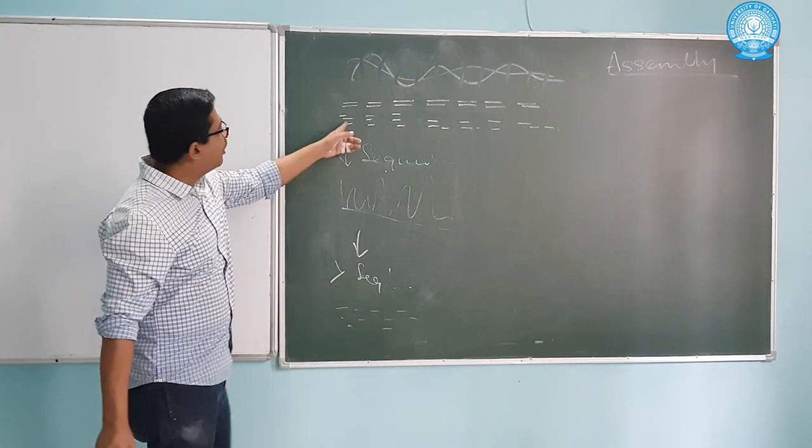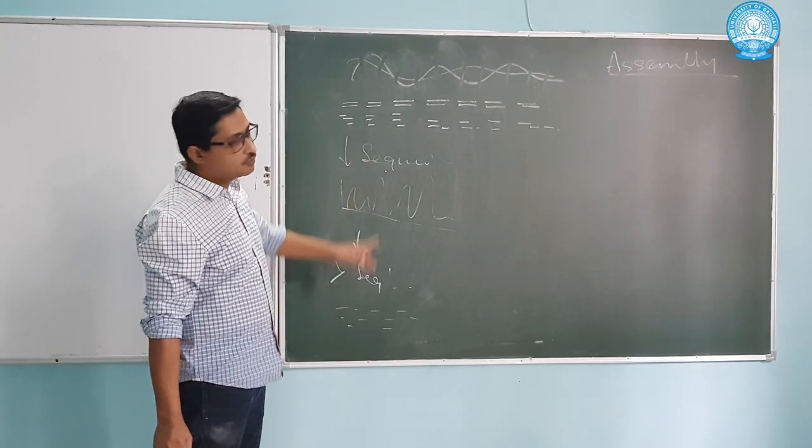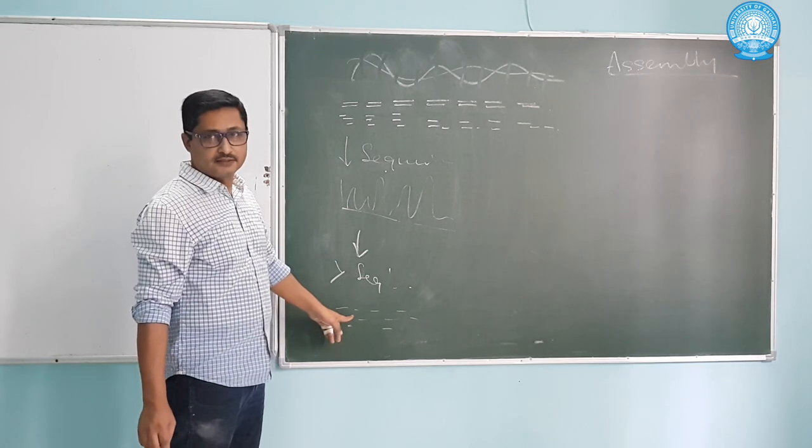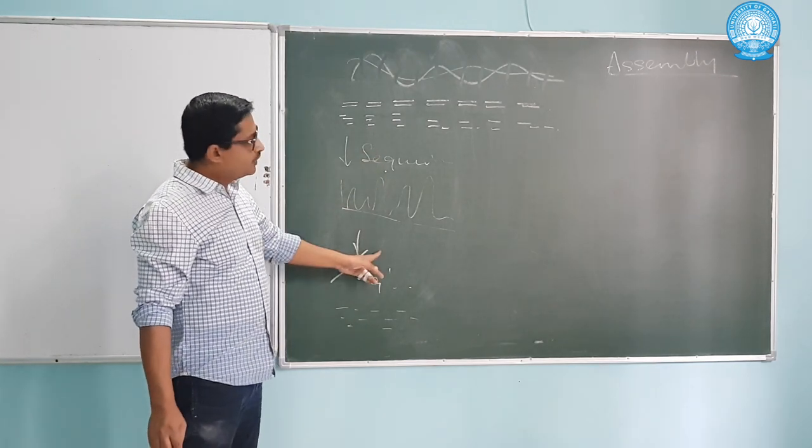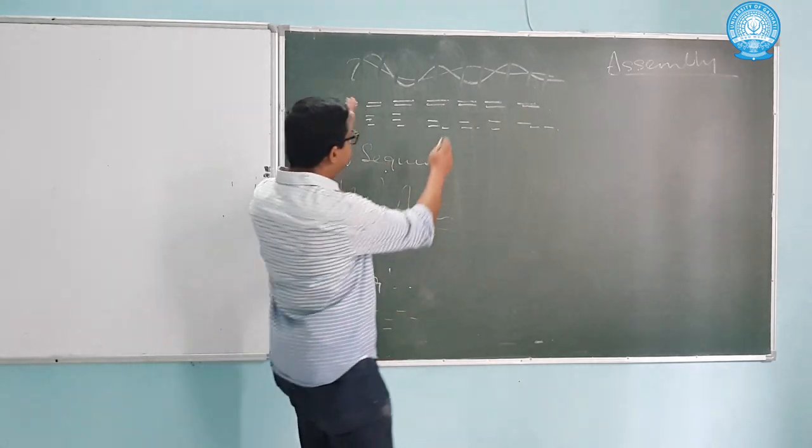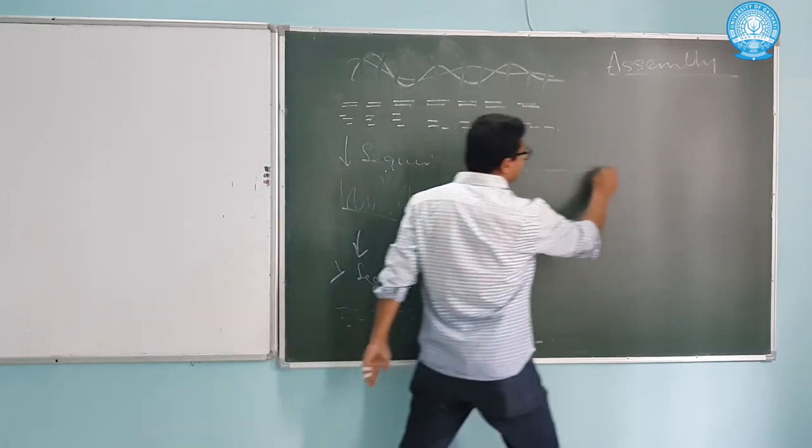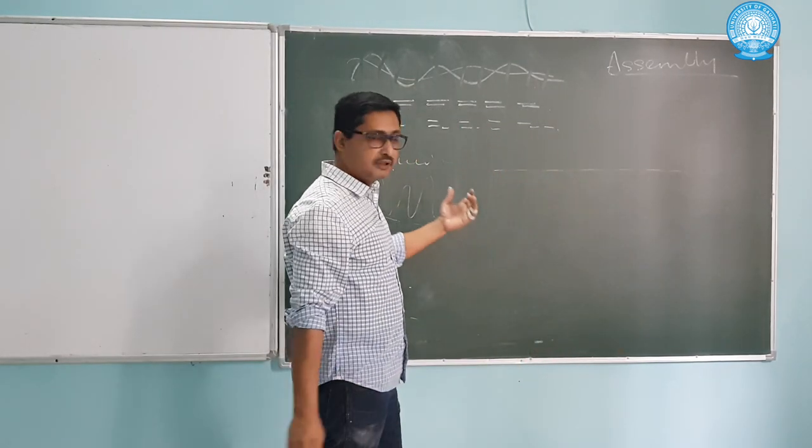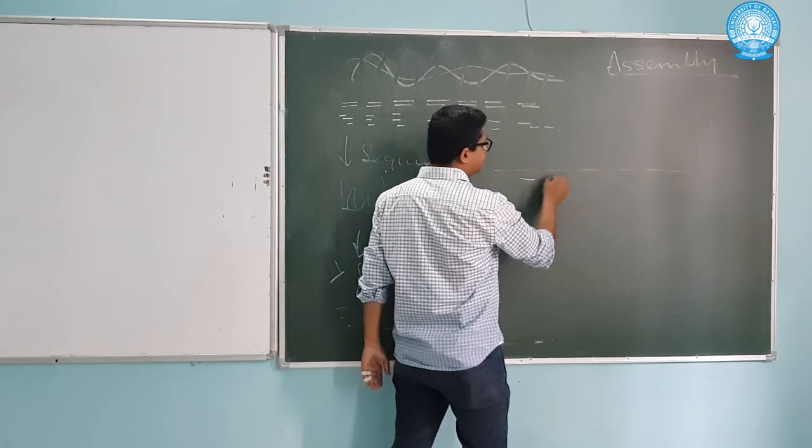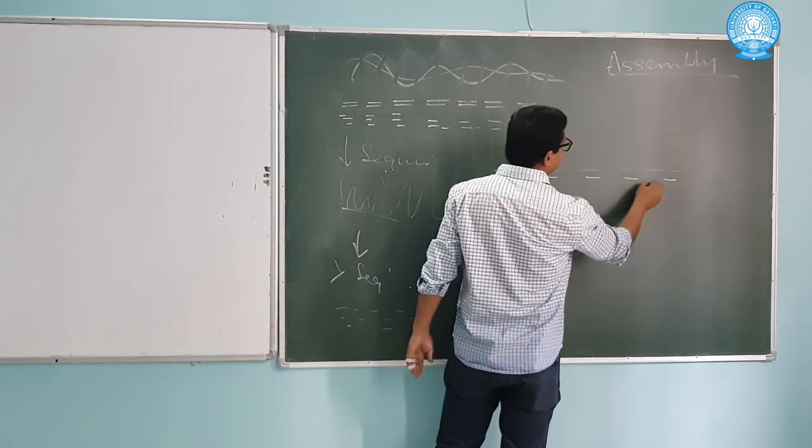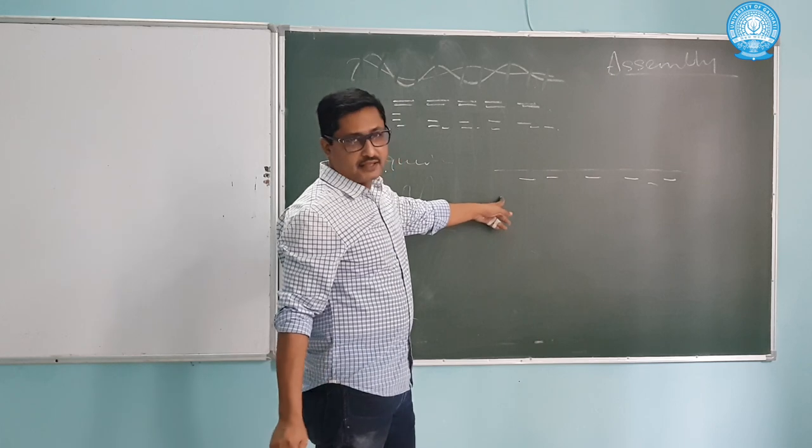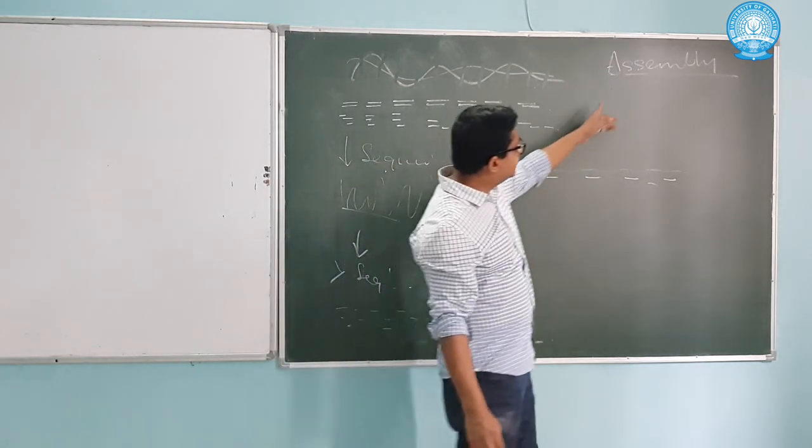After this, all these sequences will represent one FASTA or flat file. Now, you don't know which one is coming after what. If we have to reconstruct the whole genome, you have to put the different fragments in different positions. For this, we use an in-silico method called assembly.